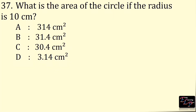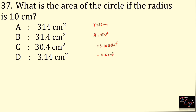What is the area of the circle if the radius is 10 cm? Radius is 10 cm. Area of a circle is πr² = 3.14 × 10² = 314 cm². The answer is option A, 314 cm².